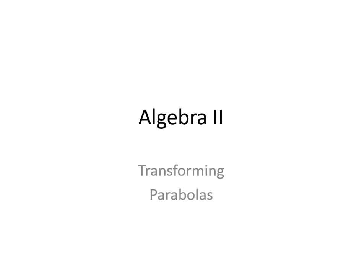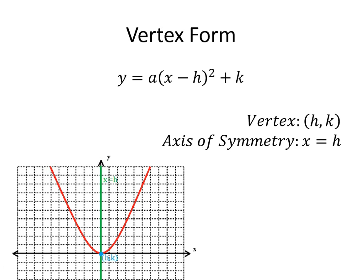All right, so now moving on from finding the vertex and axis and all that for normal quadratic functions in standard form, now we're going to be looking at it in vertex form and identifying it other ways. So first thing is vertex form.